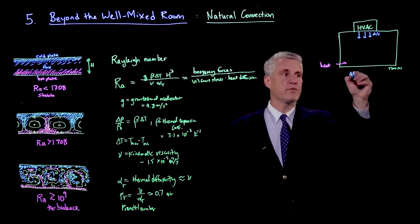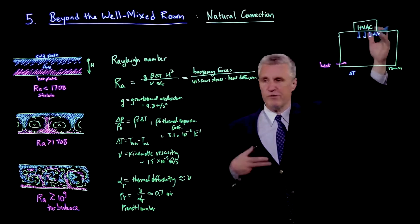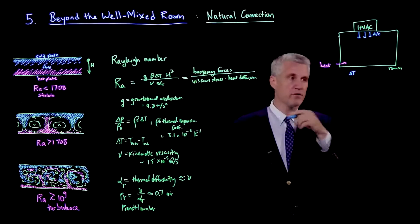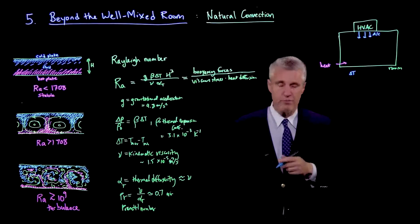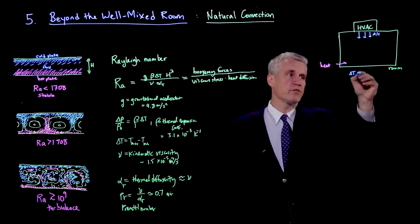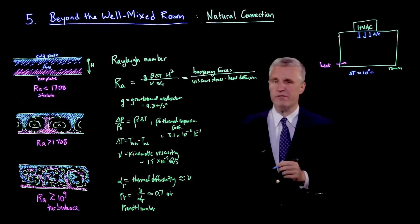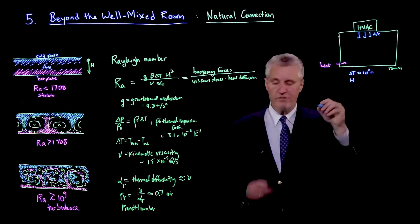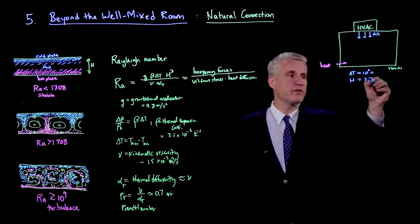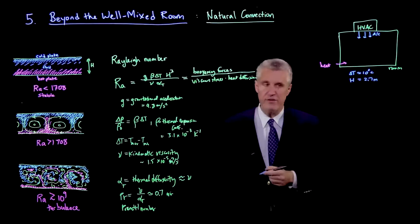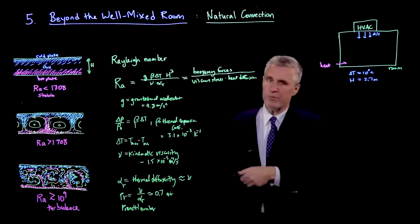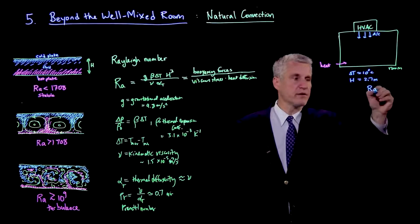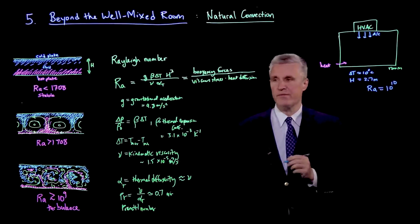Let's actually put some numbers in here. What if we say that the temperature difference between the fluid we're injecting, whether it's heating or cooling, relative to the background air in the room, which is closer to the target temperature, is only 10 degrees C? That seems like not a very big difference. But then we go back to our height, which is our length scale, and we say it's 2.7 meters, just as a standard ceiling height. If you plug in the properties of air with these numbers, the Rayleigh number is actually 10 to the 10. It's enormous.